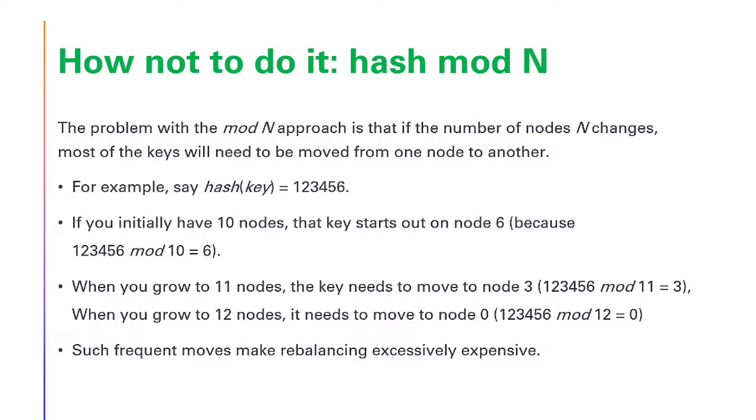The problem with the mod N approach is that if the number of nodes N changes, most of the keys will need to be moved from one node to another. For example, the hash key 123456.